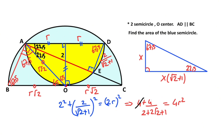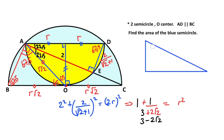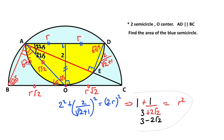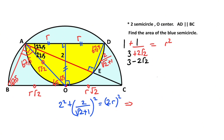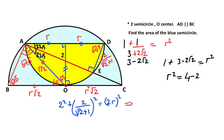Dividing both sides by the appropriate factor and multiplying by the conjugate: 4 minus 2√2. Therefore 1 plus (3 minus 2√2) over (9 minus 8) equals r squared. Simplifying: r squared equals 4 minus 2√2.